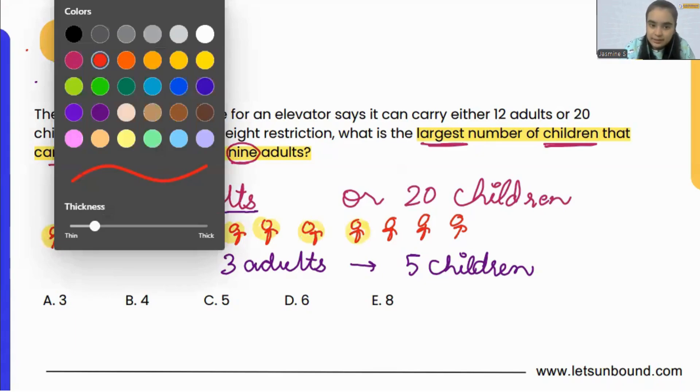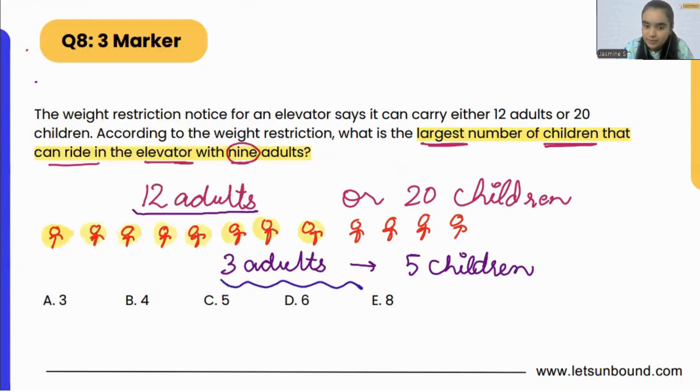And we can see from the ratio which we made that 3 adults equals 5 children. And in the elevator, as there are 9 adults, for the remaining 3 we can have 5 children.